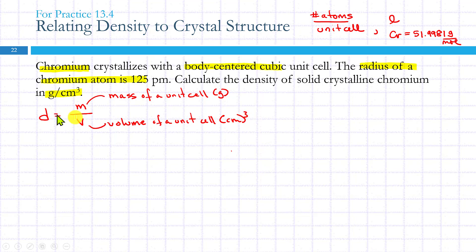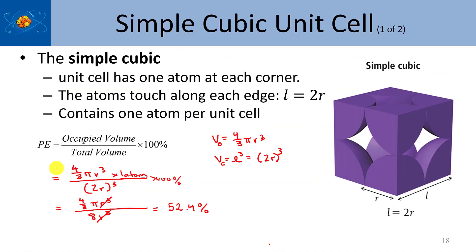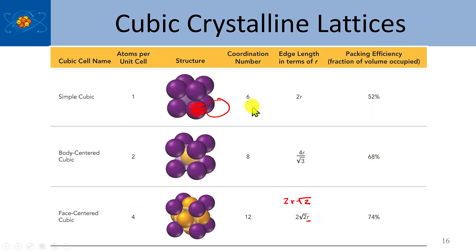This information is all located in this table. For a body-centered cubic unit cell, there are two atoms per unit cell, so there's two chromium atoms in the unit cell. And the edge length is 4r over the square root of 3.